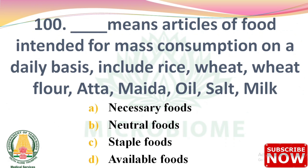Next question: dash means articles of food intended for mass consumption on a daily basis, including rice, wheat, wheat flour, atta, maida, oil, salt, and milk — options: necessary foods, neutral foods, staple foods, available foods. The right answer is Option C: staple foods.